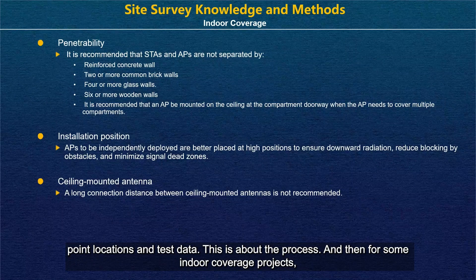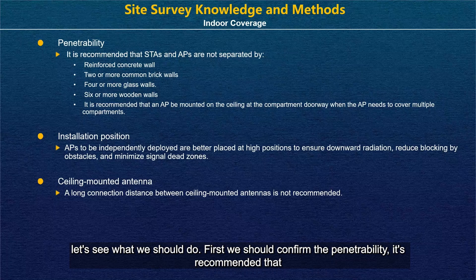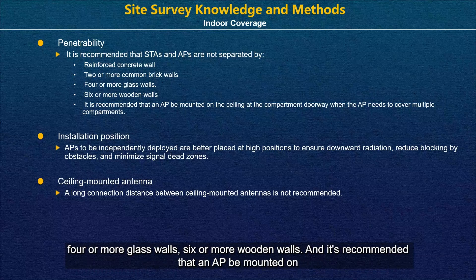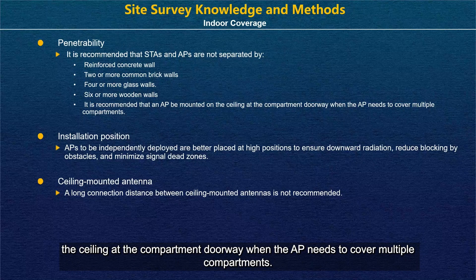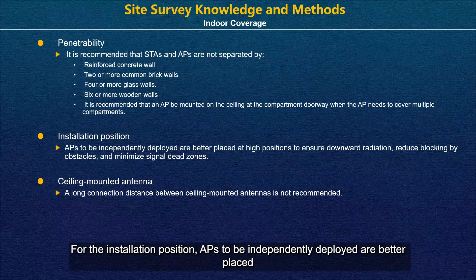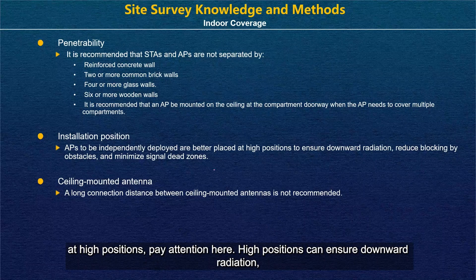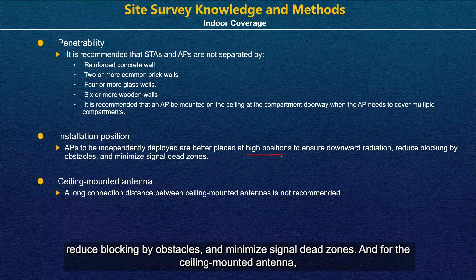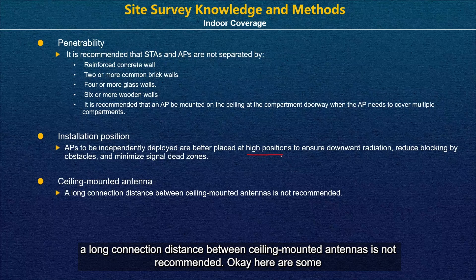For indoor coverage projects, we should confirm the penetrability. It is recommended that STAs and APs are not separated by reinforced concrete walls, or two or more common brick walls, four or more glass walls, or six or more wooden walls. It is recommended that an AP be mounted on the ceiling at the compartment doorway when the AP needs to cover multiple compartments. For installation position, APs independently deployed are better placed at high positions — high positions ensure downward radiation, reduce blocking by obstacles, and minimize signal dead zones. A long connection distance between ceiling-mounted antennas is not recommended.